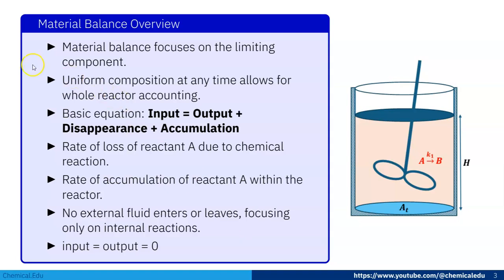Now material balance overview. Material balance focuses on the limiting component. Uniform composition at any time allows for whole reactor accounting. The basic equation of the material balance: input is equal to output plus disappearance plus accumulation.